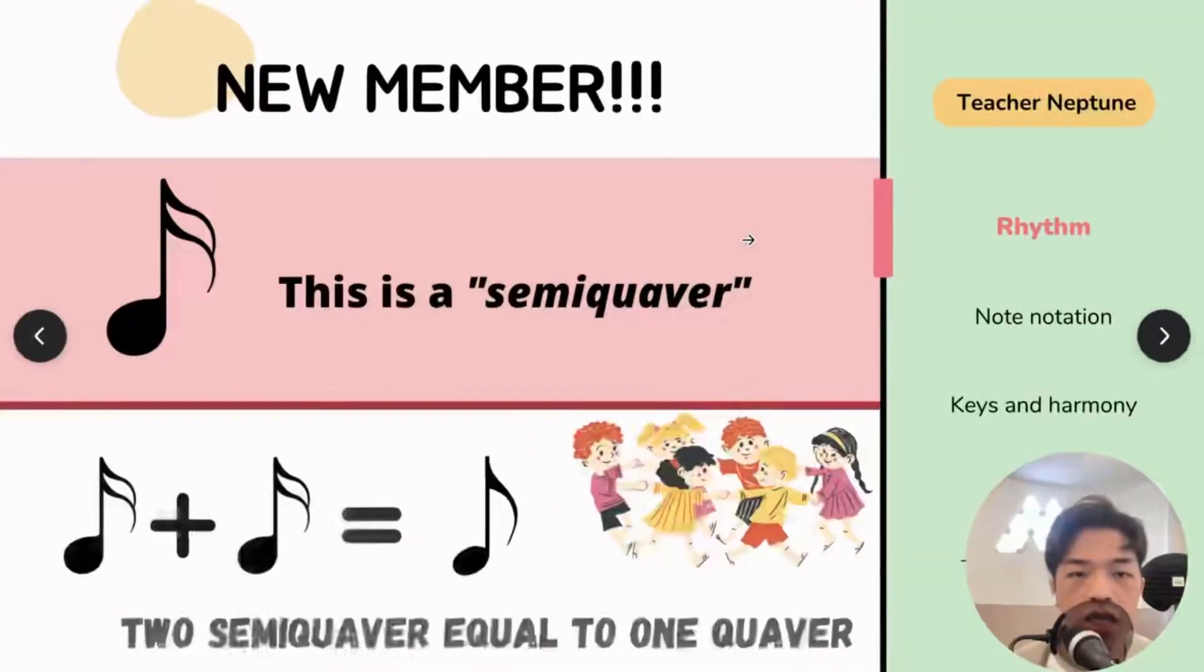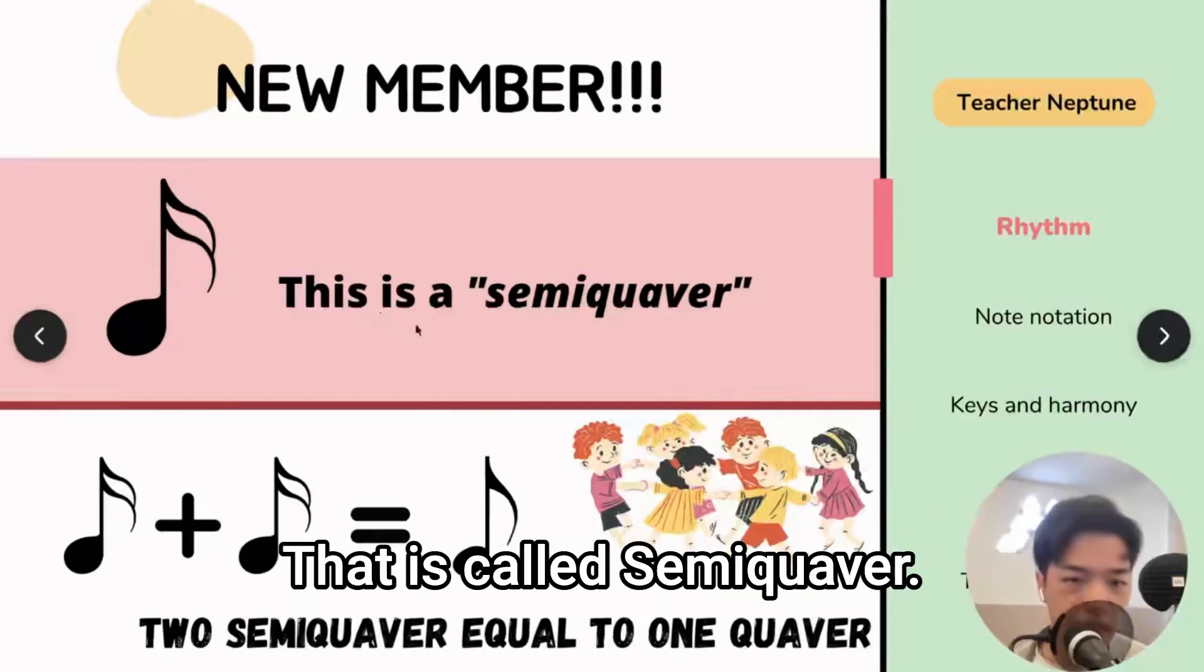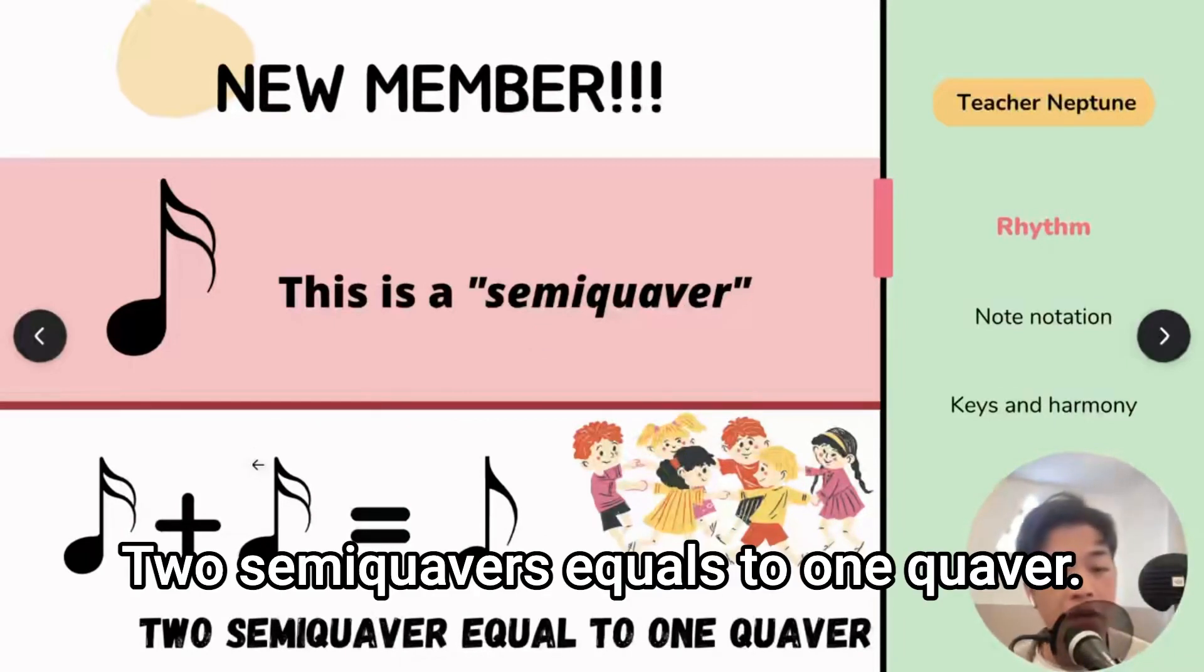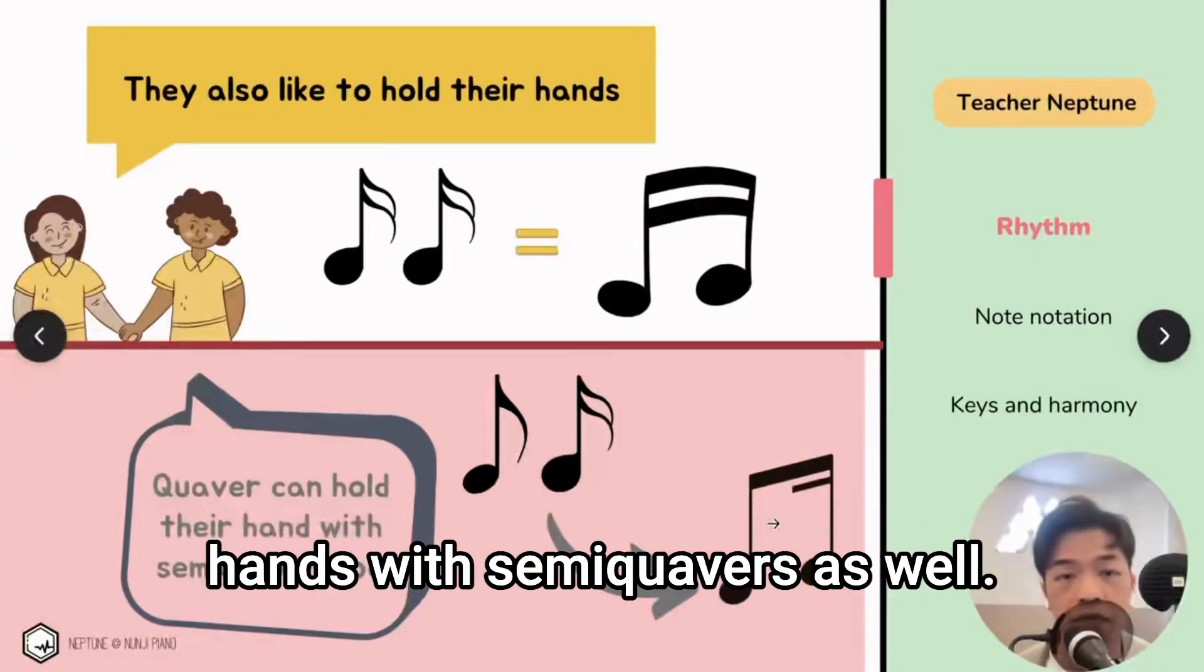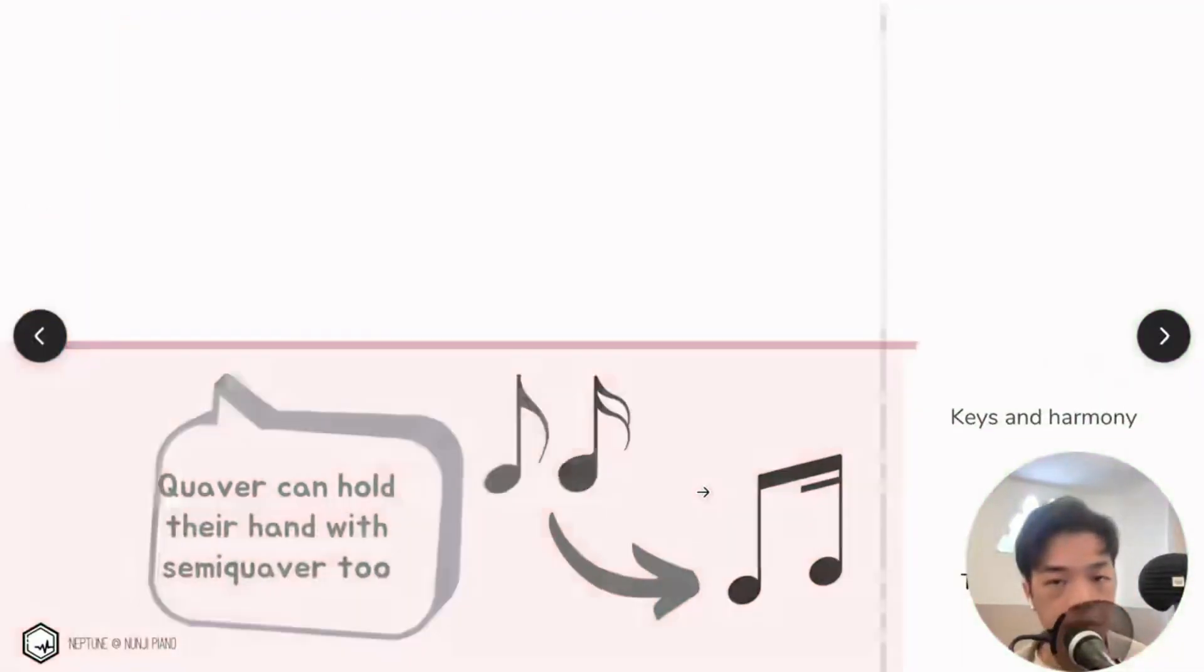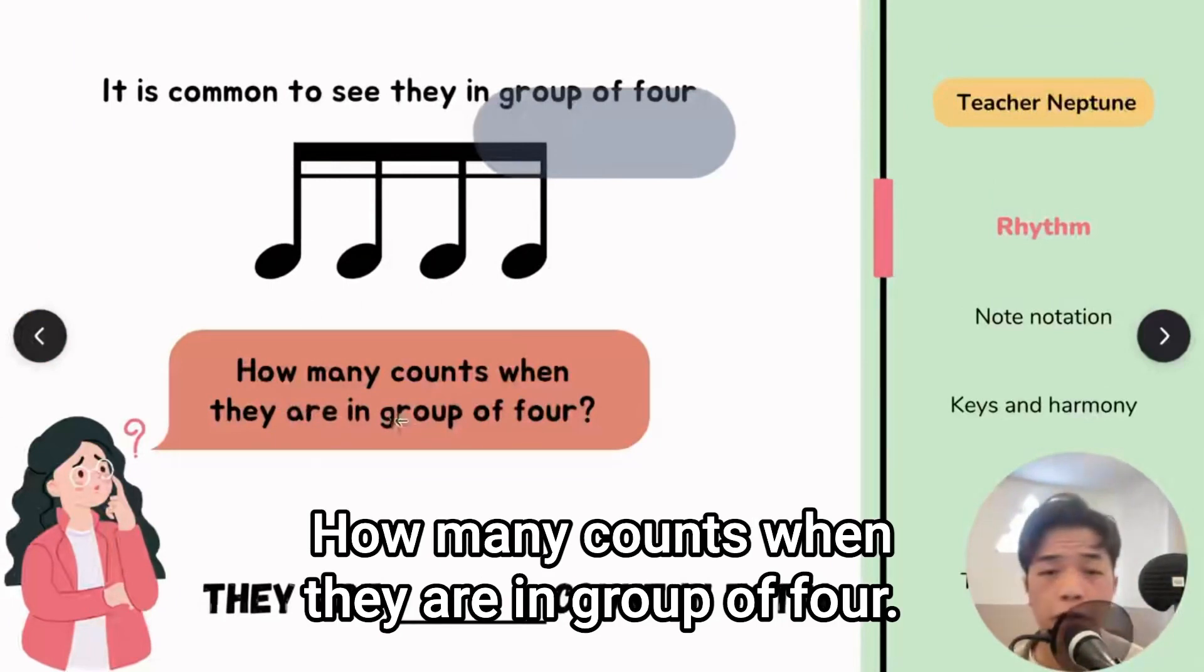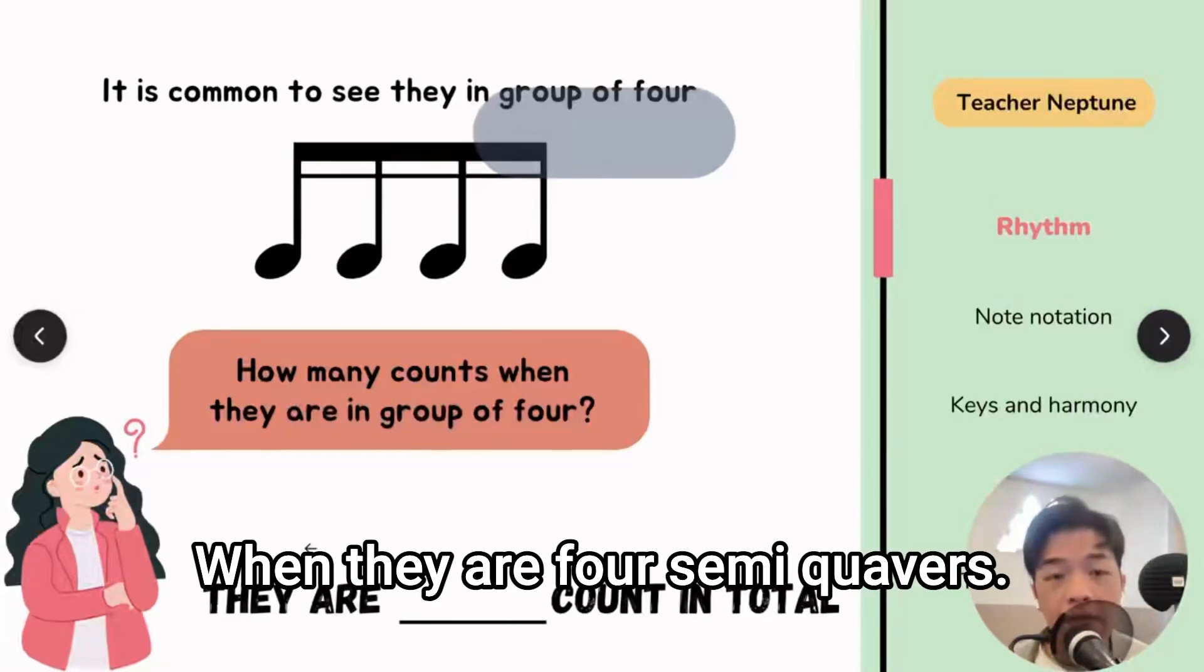Now we have a new member. When there is one tail, this is called a quaver. When there are two tails, that is called a semi-quaver. Two semi-quavers equal to one quaver, and they like to hold their hands as well. Quavers can hold hands with semi-quavers as well, so this is very common to see in groups of four. How many counts when they are in a group of four? When there are four semi-quavers, it becomes one count in total.